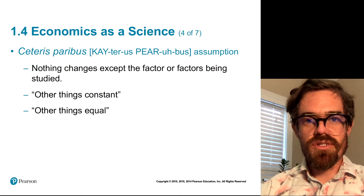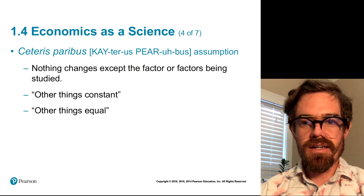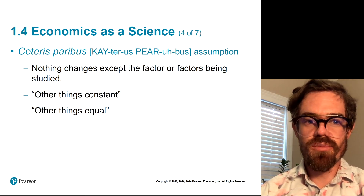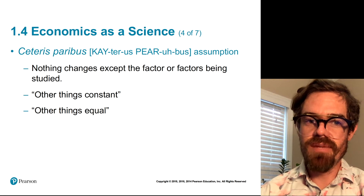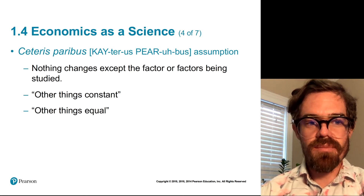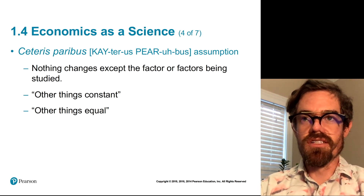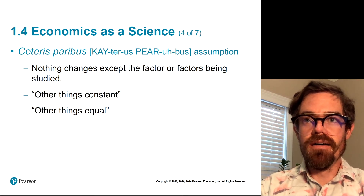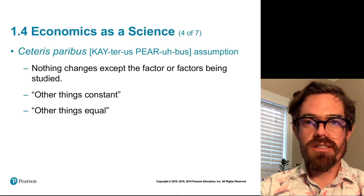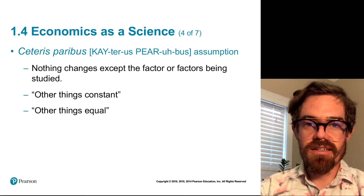There is one important assumption we make in economics and in most sciences, and that's called the Ceteris Paribus Assumption. Ceteris Paribus is a Latin phrase that basically means other things are held constant, or other things are held equal. What that means is that nothing changes except for the factor or factors being studied. For example, if we were to build a model paper airplane and wanted to look at the effect of the weight of the paper on how far it flies, we wouldn't want to also simultaneously change the design of the paper airplane.